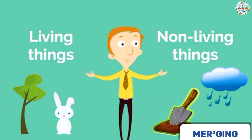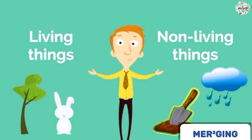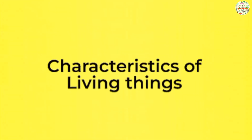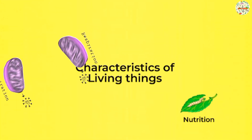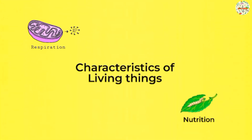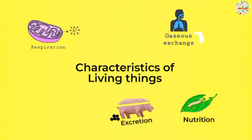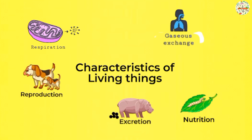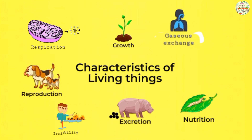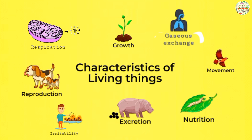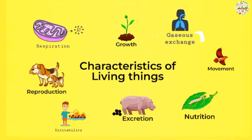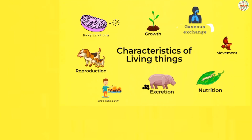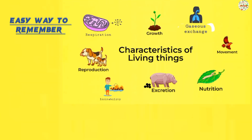So these characteristics are eight in number and they are as follows: nutrition, respiration, gaseous exchange, excretion, reproduction, growth and development, irritability, and lastly, movement. So anything that is considered to be alive should have all of these characteristics in total.